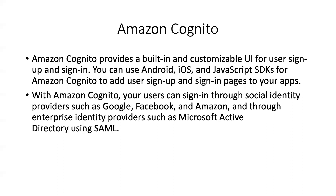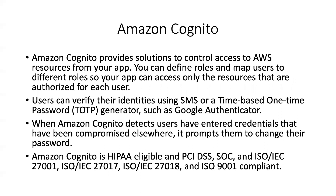Cognito provides solutions to control access to AWS resources from your app by using the identity pool. We'll be creating two IAM roles — one for authenticated entities and one for unauthenticated entities. Users can verify their identities with multi-factor authentication using a one-time password, SMS, or Google Authenticator. When Cognito detects that users have entered compromised credentials, it prompts them to change their password — it has adaptive, enhanced authentication features.